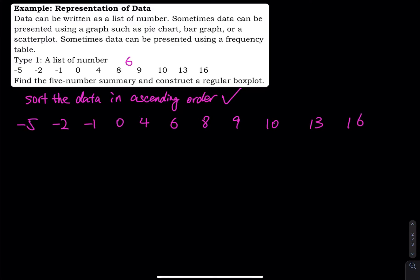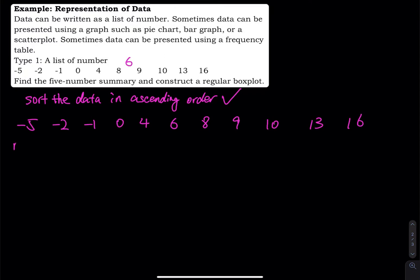The easiest numbers you can find are the minimum and the maximum. And then how many data do we have? We have 11 data. So where is the median? The median is the sixth entry. On the left-hand side of six, we have five values; on the right-hand side of six, we have five values. So we divide the entire data set into two equal pieces. For the first five numbers, that gives us Q1, and then on the other side, Q3.